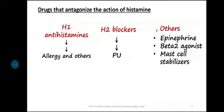Other drugs that antagonize histamine effects include epinephrine, the physiological antagonist of histamine. Epinephrine induces vasoconstriction and bronchodilation, which antagonize histamine's effects of vasodilation and bronchoconstriction. Epinephrine is used as a life-saving measure in anaphylactic shock. Beta-2 agonists and mast cell stabilizers also decrease mast cell degranulation and histamine release.